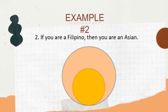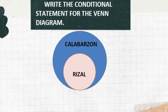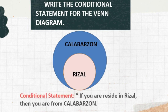Next example: if you are a Filipino, then you are an Asian. The hypothesis is: you are a Filipino. The conclusion: you are an Asian. Next, write the conditional statement for the Venn diagram. Remember, the hypothesis is always inside the conclusion. Here, the hypothesis is Rizal and the conclusion is Calabarzon. So the conditional statement: if you reside in Rizal, then you are from Calabarzon.